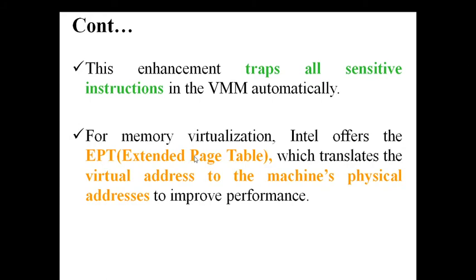Regarding the Extended Page Table (EPT): in our computer we have a page table in the OS that converts logical addresses to physical addresses. Now with virtualization we also have a virtual address — the address stored at the virtual machine level. That virtual address must be converted to an actual physical address, and then to a machine address that the computer can understand. These two conversions — virtual to physical, and physical to machine address — are handled by the Extended Page Table.